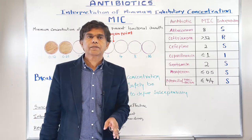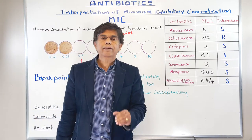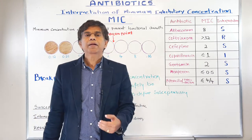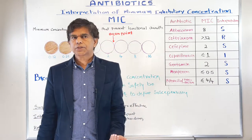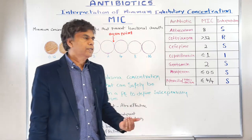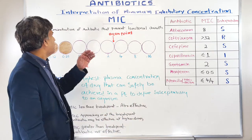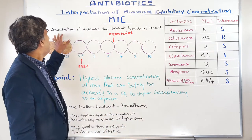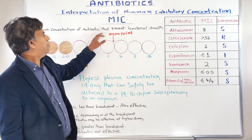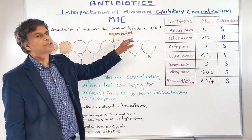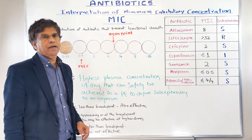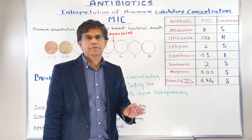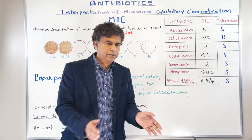The second term is MBC — the minimum bactericidal concentration. This is the minimum concentration of antibiotic that kills the bacteria. MBC is bactericidal, meaning it's actually killing the bacteria, not just inhibiting growth.